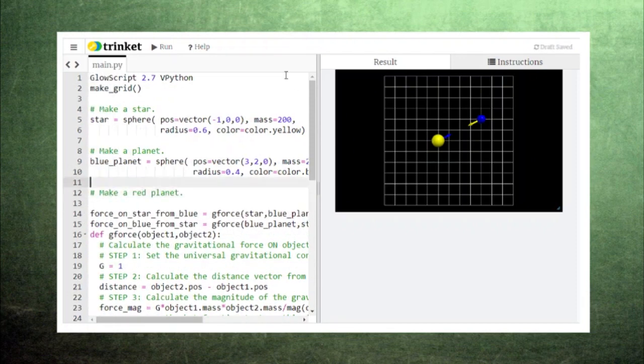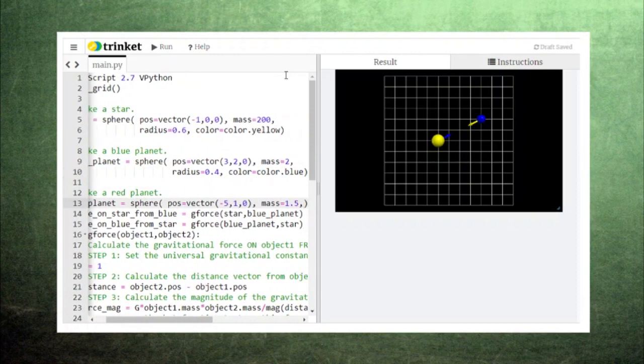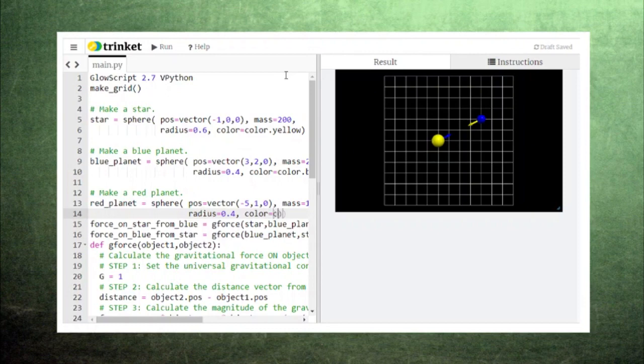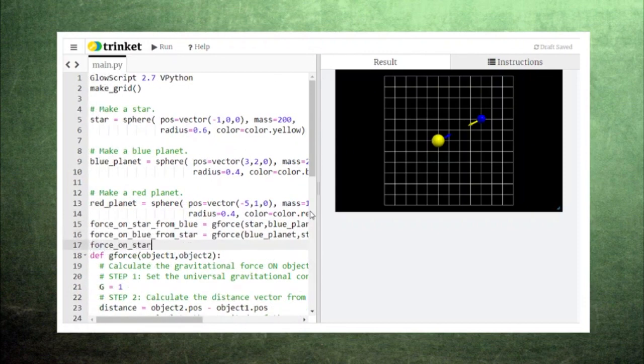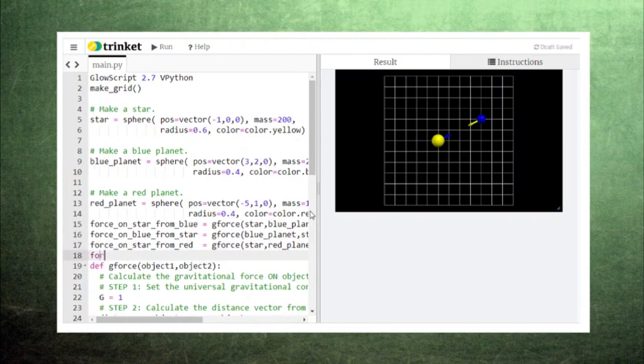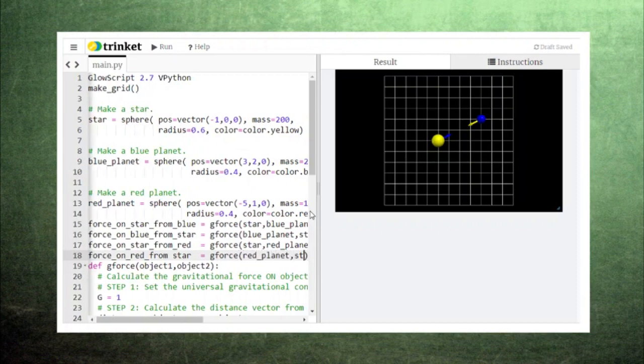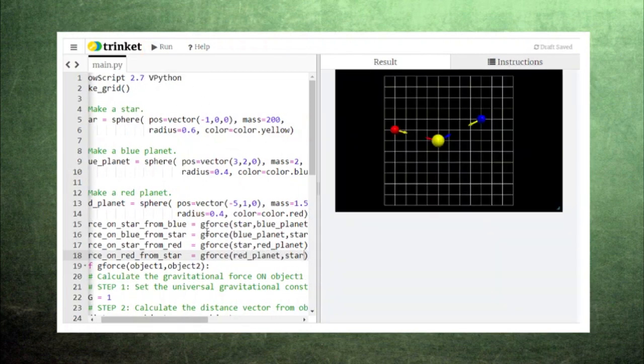Suppose we now add a red planet that has less mass than the blue planet, and we place it about the same distance away from the star. We can now add calculations of the force of gravity from the sun to the red planet, and from the red planet to the sun. From this new diagram, we can see that the star is experiencing two forces. One from the red planet, and one from the blue planet, and the force from the heavier blue planet is stronger.